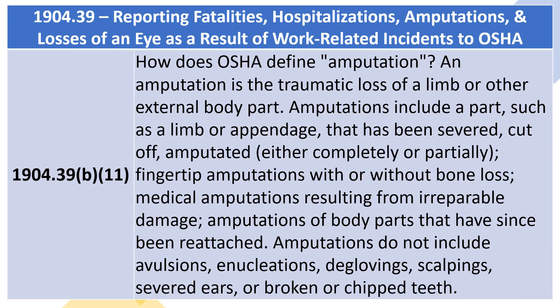1904.39(b)(11): How does OSHA define amputation? An amputation is the traumatic loss of a limb or other external body part. Amputations include a limb or appendage that has been severed, cut off, or amputated (either completely or partially), fingertip amputations with or without bone loss, medical amputations resulting from irreparable damage, and amputations of body parts that have since been reattached. Amputations do not include avulsions, enucleations, deglovings, scalpings, severed ears, or broken or chipped teeth.